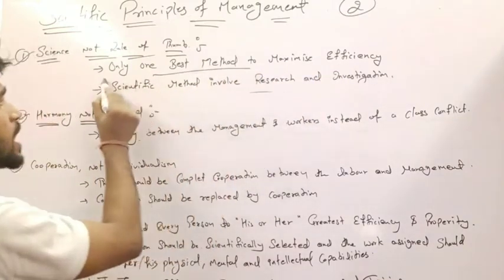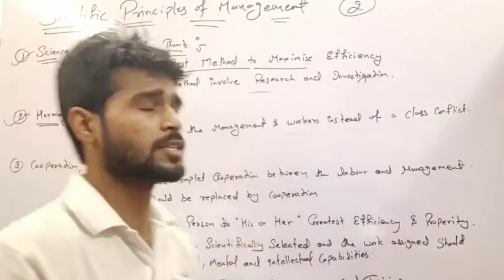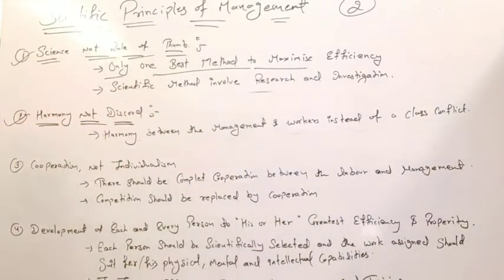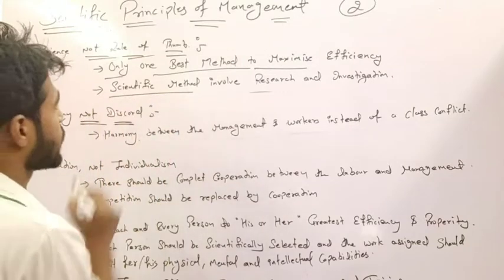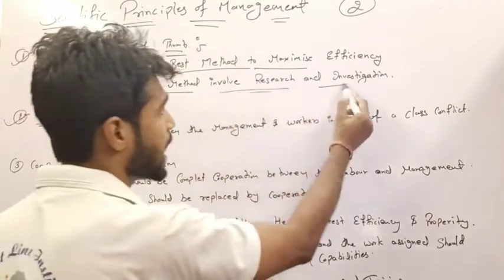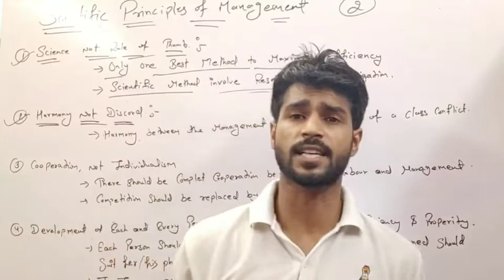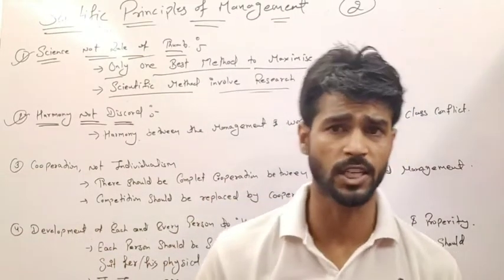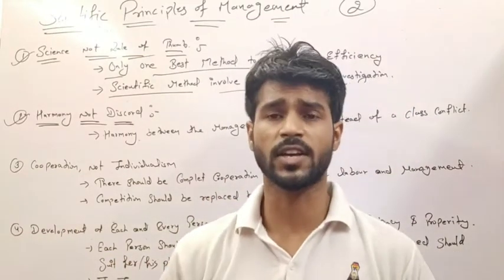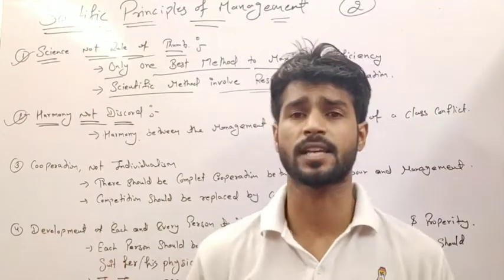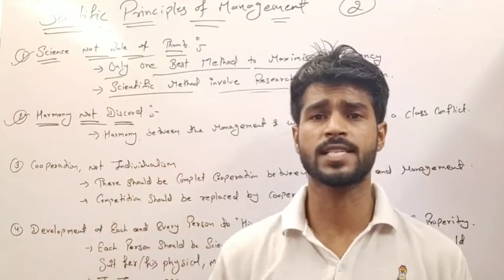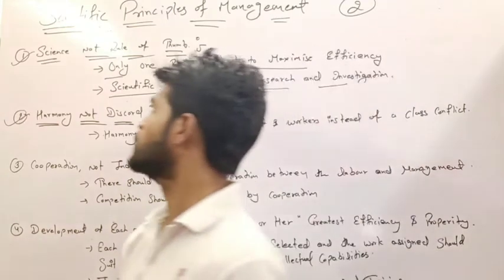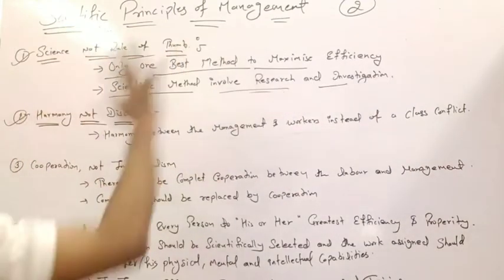The method is very important for us to complete the work. The best method is to use new techniques. This is called scientific management, which involves research and investigation. You have to do research and investigation so that your organization costs less and your organization's efficiency increases. This is called science, not rule of thumb.